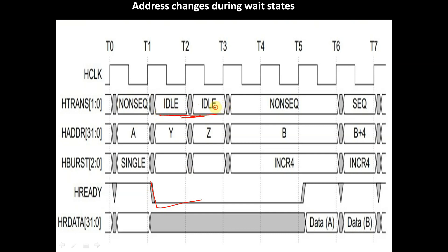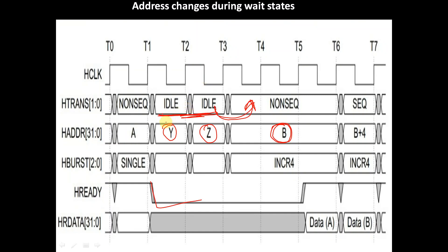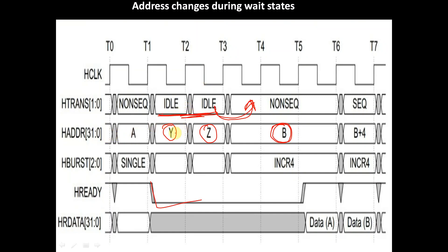The transfer is changing from IDLE to non-sequential. When the transfer type is IDLE, we can see the address is changing from Y to Z. And when the transfer type is getting changed from IDLE to non-sequential, then the address is constant throughout this cycle. So during a wait state, a master is allowed to change the address only when the transfer is an IDLE transfer. In other transfer types, the address should be constant throughout the wait state.